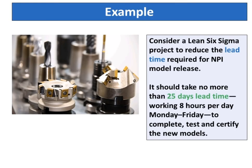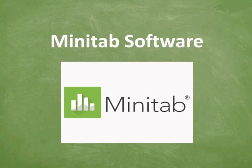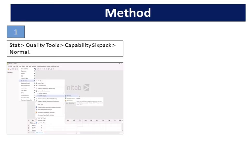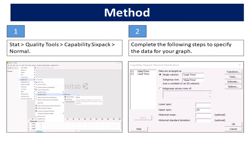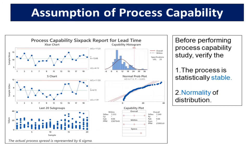Let's take an example. Consider a Lean Six Sigma project to reduce the lead time required for NPI model release. It should take no more than 25 days lead time, working 8 hours per day Monday-Friday, to complete, test and certify the new models. What is the process capability for the lead time? We will use Minitab software to analyze the data. Select Stat > Quality Tools > Capability 6-Pack > Normal. Complete the following steps to specify the data for your graph. The process capability 6-pack for lead time is shown below.